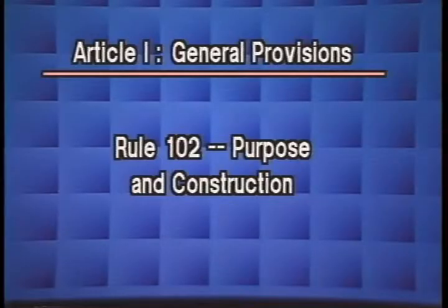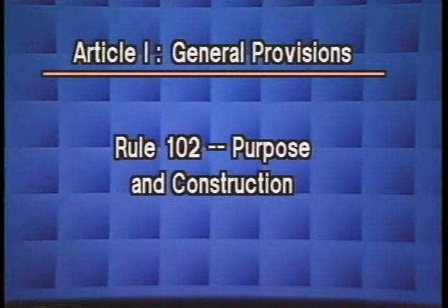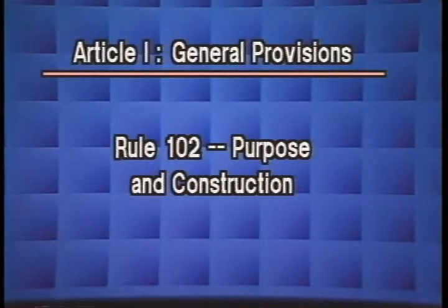Rule 102 says the obvious: construe the rules to secure fairness to the end that the truth may be ascertained and proceedings justly determined. We are now through with two rules and you need never see those two rules again.